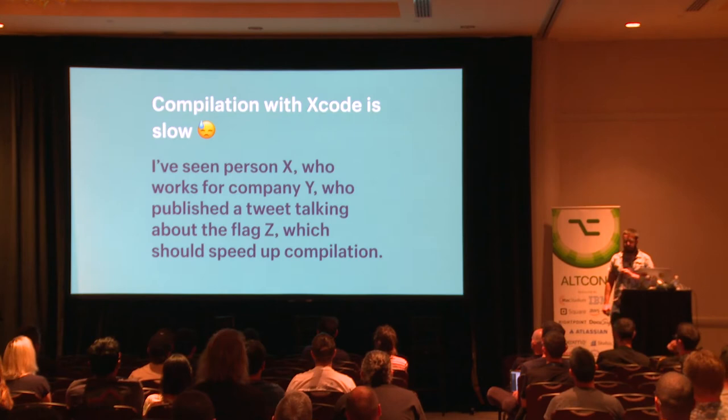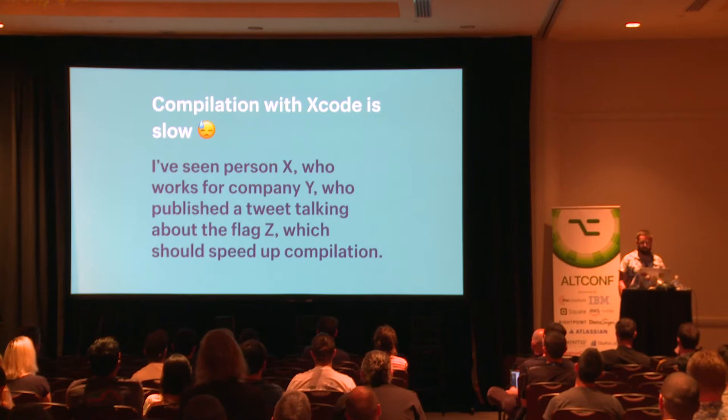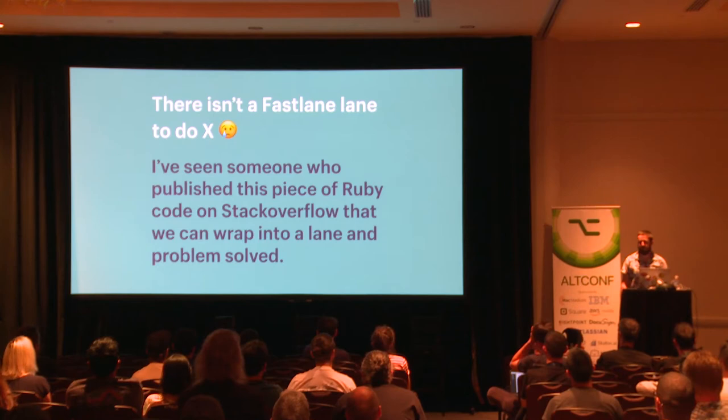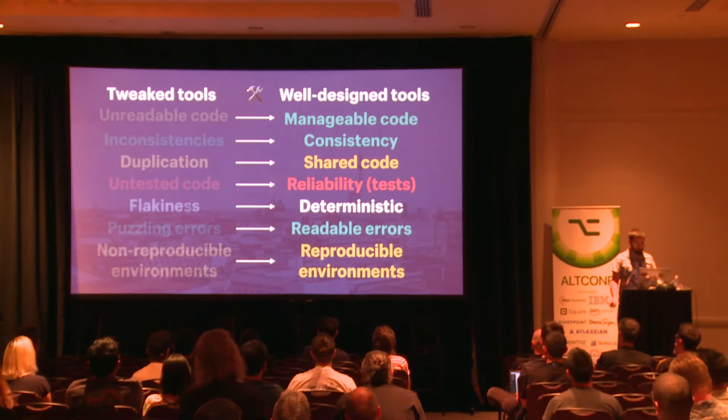For example, we're working with Xcode, which is super slow. Someone published a tweet about a compiler flag that should speed up compilation, and I copy that flag. Or I don't have a Fastlane lane to do something, so I go to Stack Overflow, find a beautiful Ruby method, put it in my Fastfile, and everything works. Those are tweaks—we are tweaking tools so that they work for what we need.